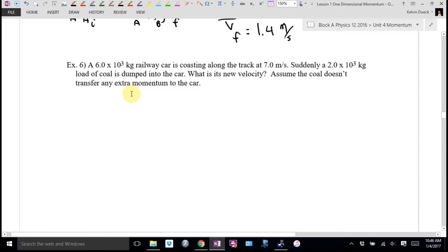Example six. Here's where we left off. A 6.0×10³ kg railway car is coasting along a track at 7.0 m/s. Suddenly, a 2.0×10³ kg load of coal is dumped into the car. Hey, this is kind of like a collision. What's its new velocity of the combined masses afterwards? I was going to use C for car, but C for coal doesn't work. I'm going to use R for railway car, and I'll use C for coal.